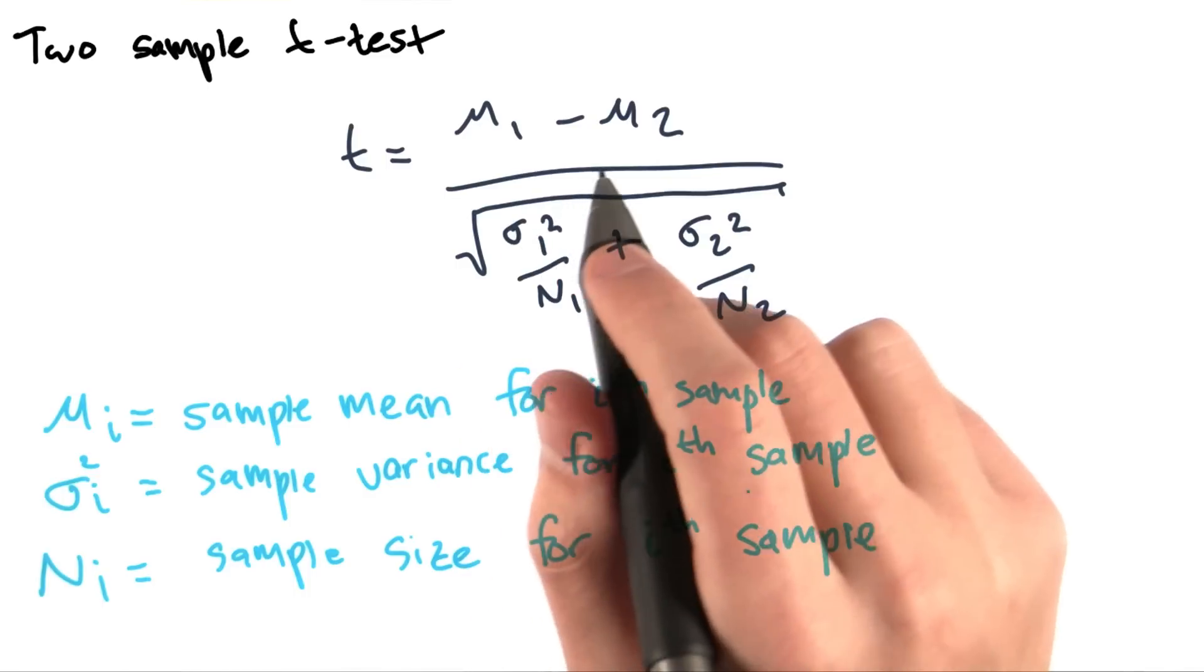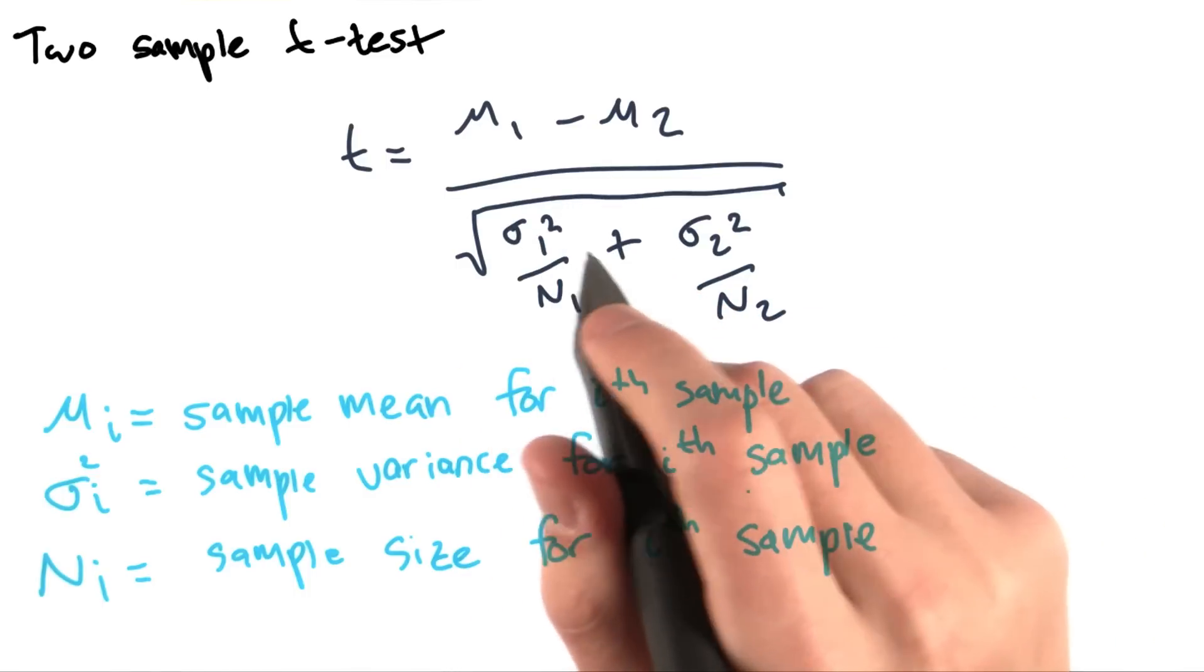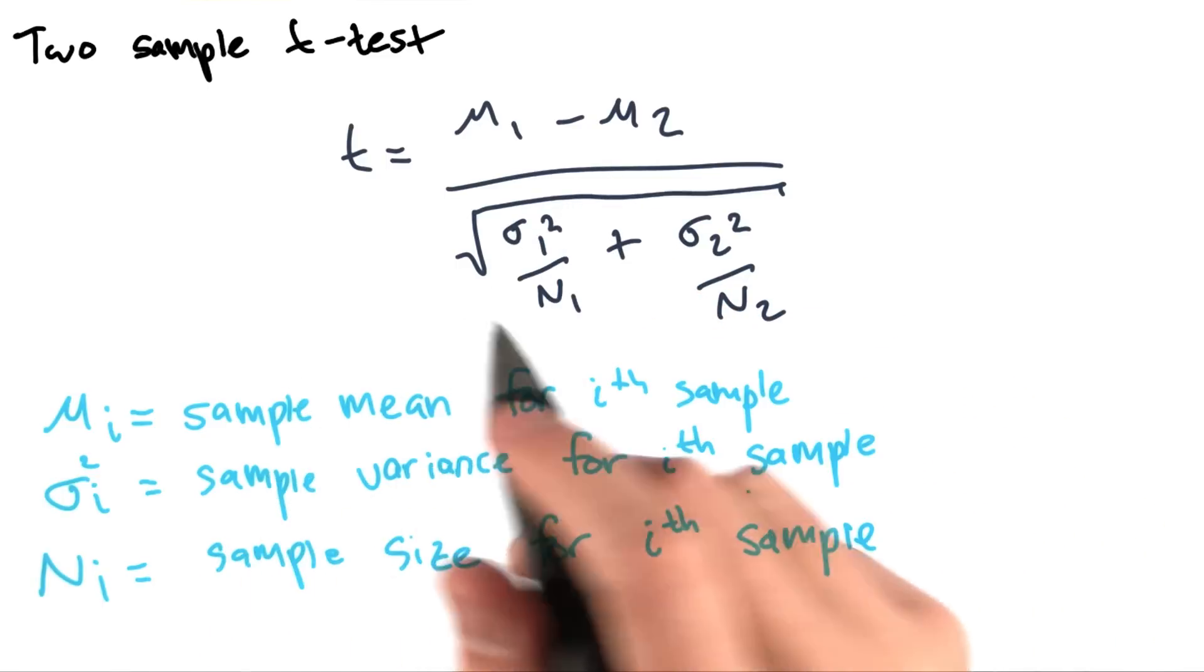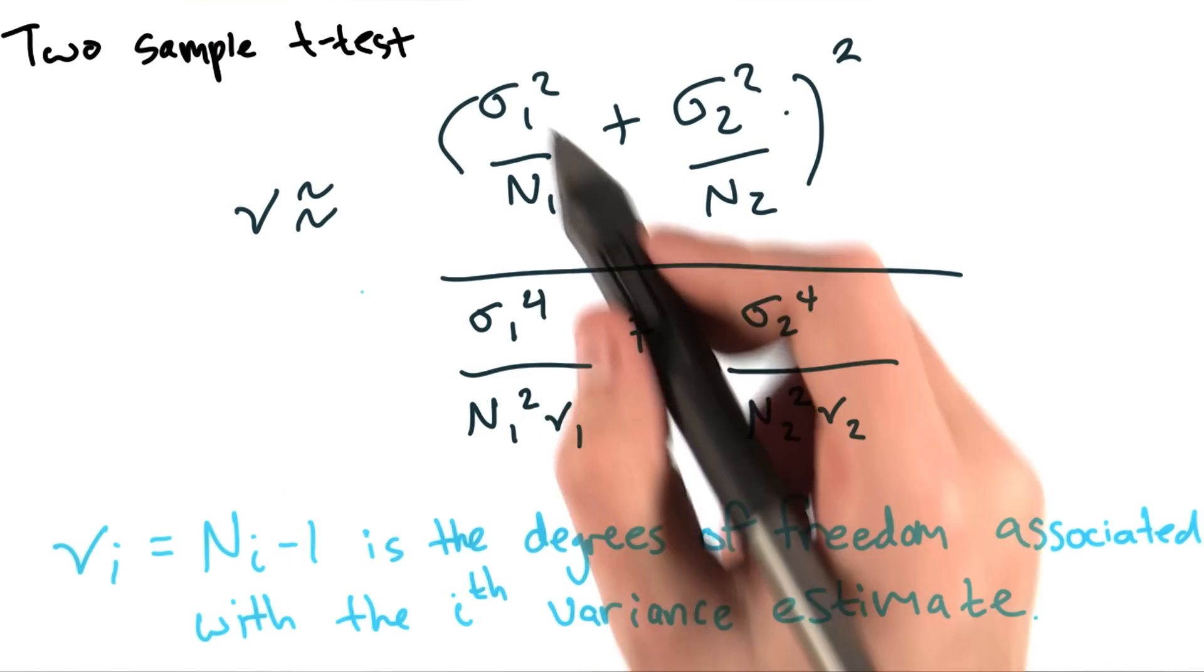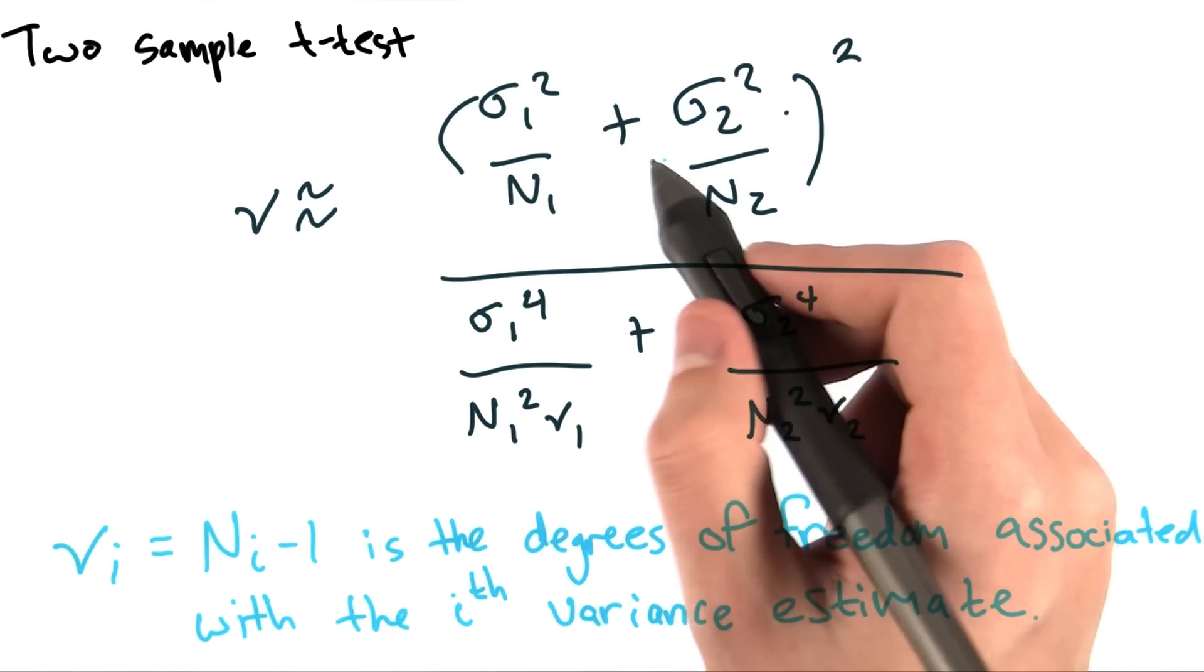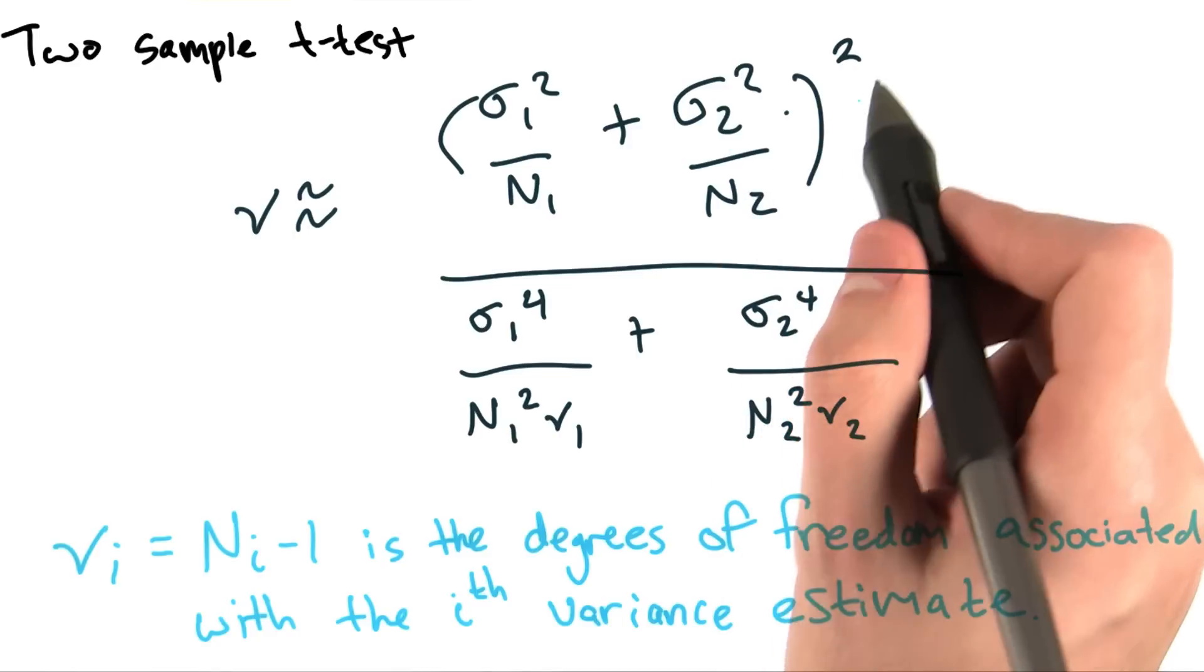We'll also want to estimate the number of degrees of freedom, nu, using the following equation. Nu is approximately equal to quantity sigma1 squared over n1, plus sigma2 squared over n2 squared,